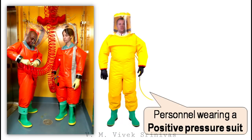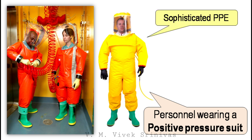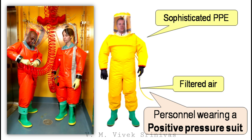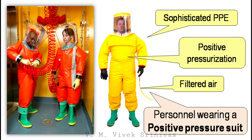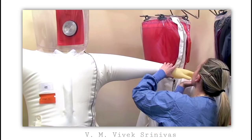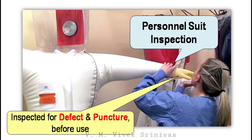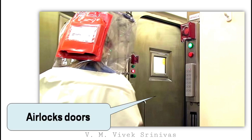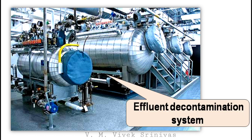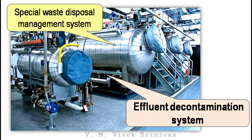The laboratory workers in this lab must wear a positive pressure suit — sophisticated personal protective equipment. Fresh, filtered air is supplied to the interior of the suit through a tube, so this positive pressurization forces air out instead of being sucked in. This positive pressure suit has to be inspected for defects and punctures before use. These facilities are featured with airlock entry and airlock doors between rooms, and also an effluent decontamination system, which is a special waste disposal management system followed in BSL4 labs.